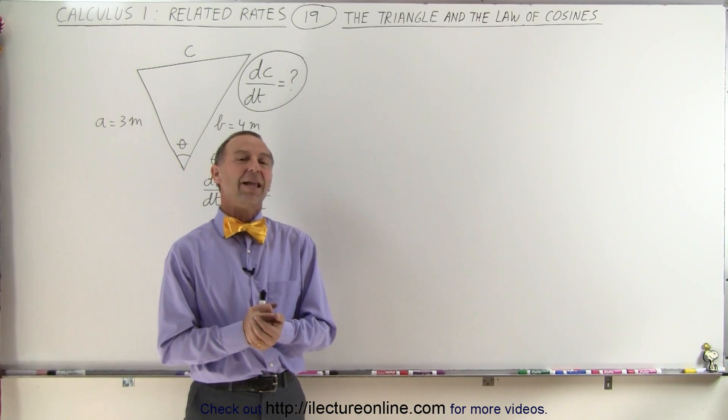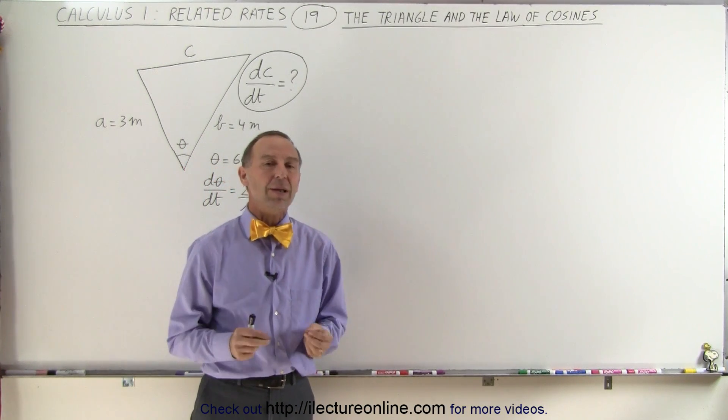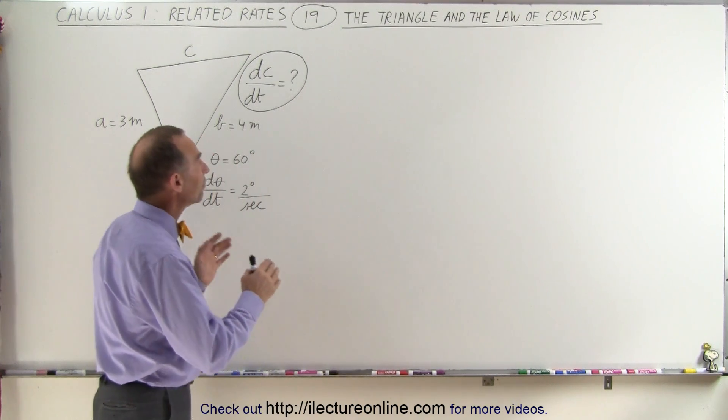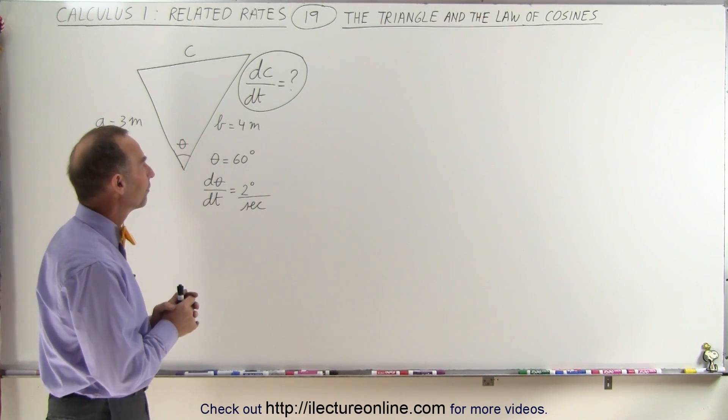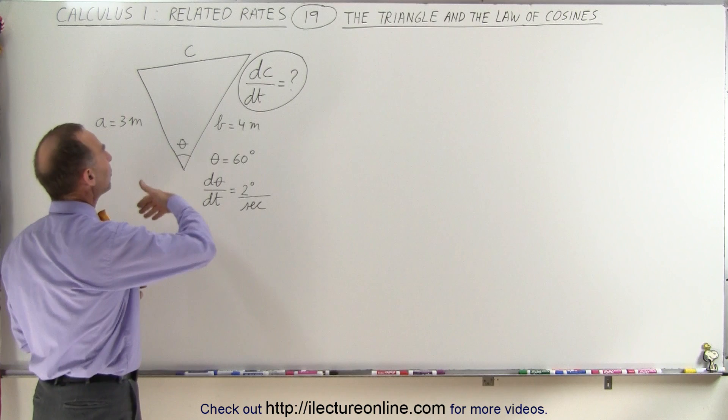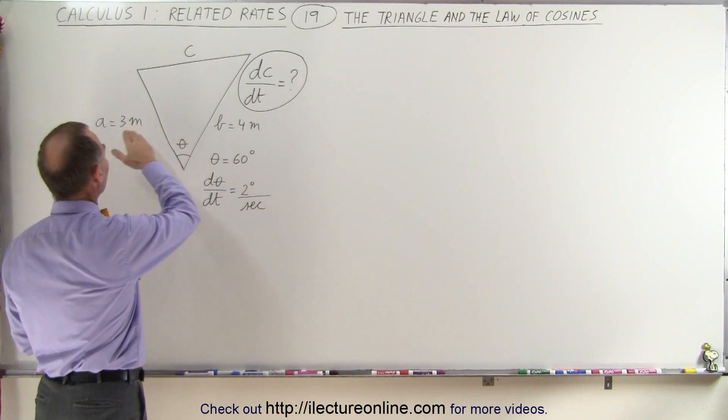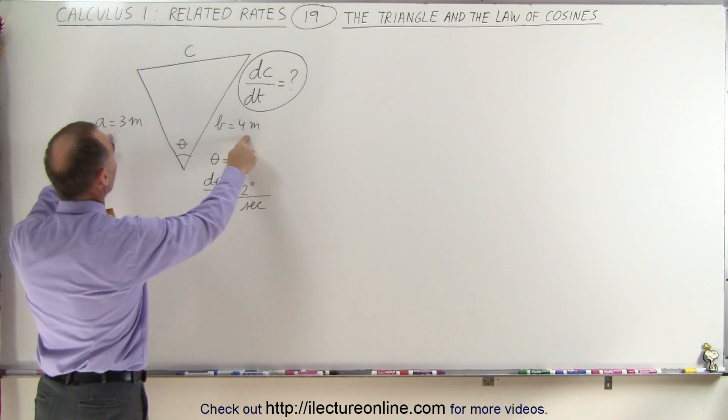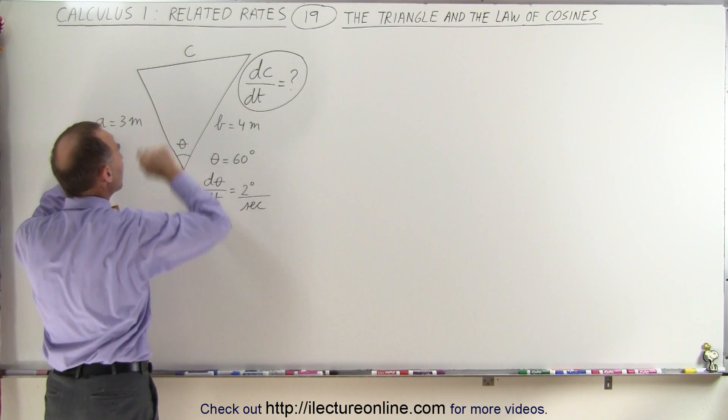Welcome to ElectronLine. Now let's apply related rates problems to a triangle involving the law of cosines. Here we have an irregular triangle with sides A and B that are known, 3 and 4 meters. Here is side C.